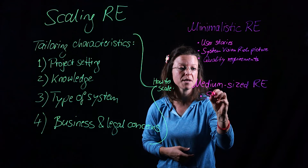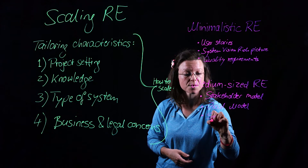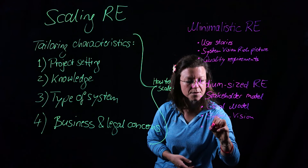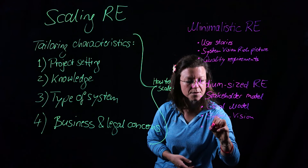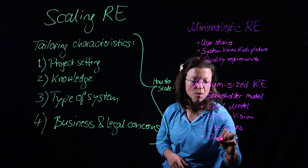So we want to make sure that we have the stakeholders captured in a stakeholder model, that we have a goal model, that we again have a system vision, and use cases — which are a specification that has more detail than the user stories in an agile environment. In a use case description we have more of the background information and the context information. And then we also need quality requirements, process requirements, and constraints.